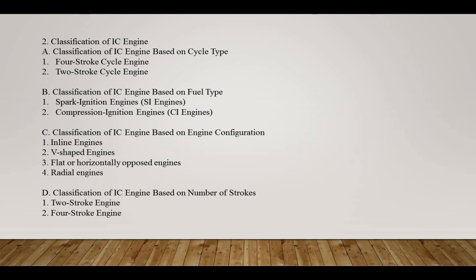Compression ignition engines are also known as diesel engines because diesel is used as the primary fuel. The combustion process in a CI engine is ignited by the high temperature and pressure of the compressed air in the cylinder, without the need for an external ignition source. CI engines are commonly used in heavy-duty vehicles such as trucks, buses, and construction equipment, as well as in marine and stationary power applications. These engines are known for their high fuel efficiency, low operating cost, and high durability.